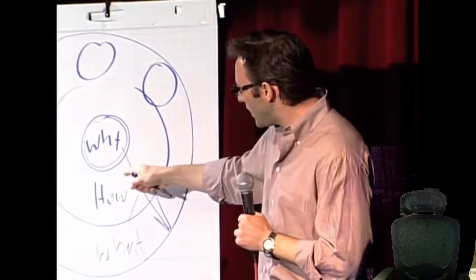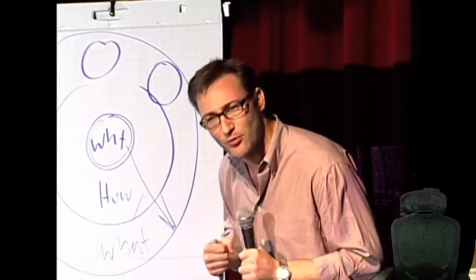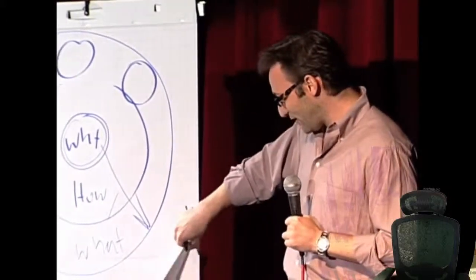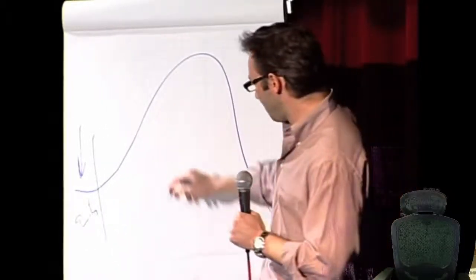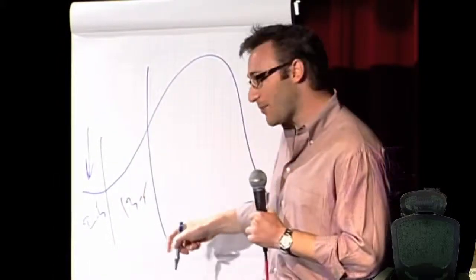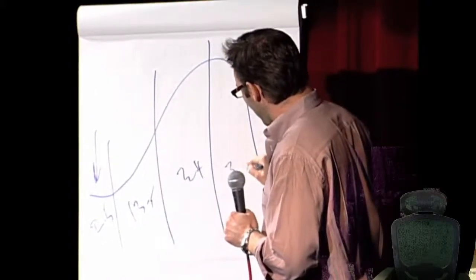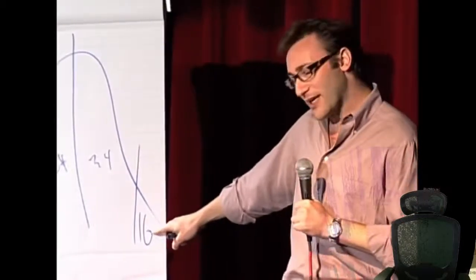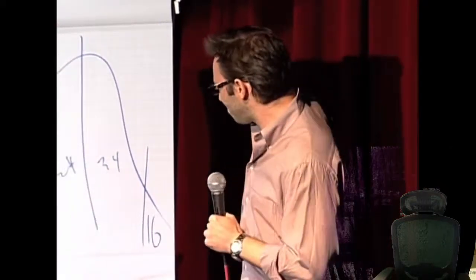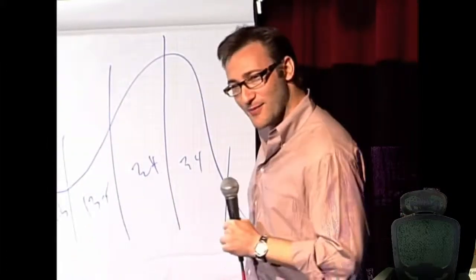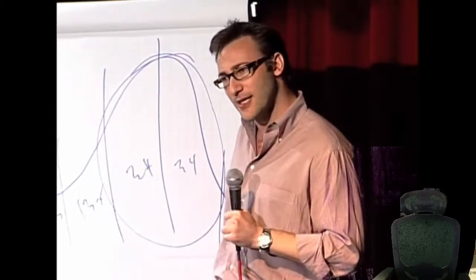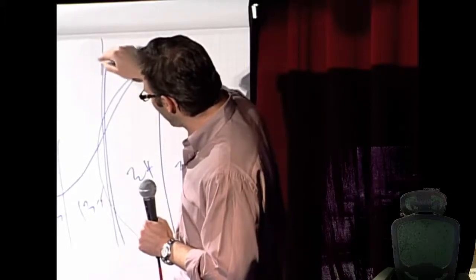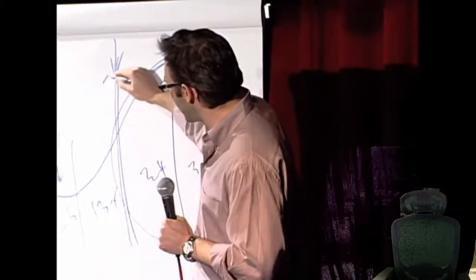People don't buy what you do — they buy why you do it. If you talk about what you believe, you will attract those who believe what you believe. This leads to something called the law of diffusion of innovation. The first 2.5% of our population are innovators; the next 13.5% are early adopters; then the early majority, late majority, and laggards. To achieve mass market success, you cannot reach it until you achieve the tipping point between 15% and 18% market penetration, and then the system tips.